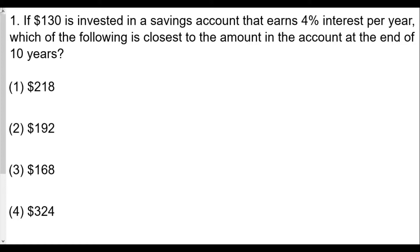Number one: If $130 is invested in a savings account that earns 4% per year, which of the following is closest to the amount in the account at the end of 10 years?